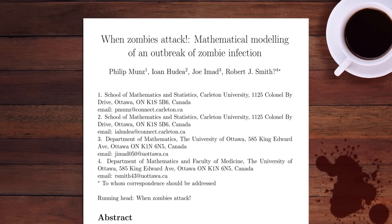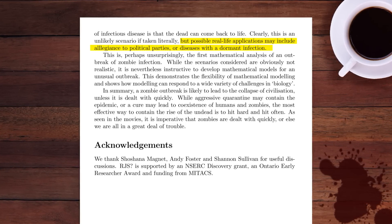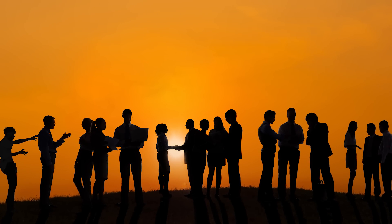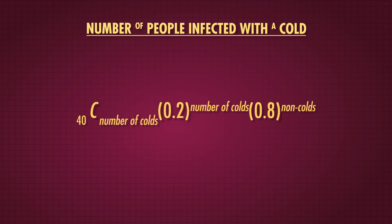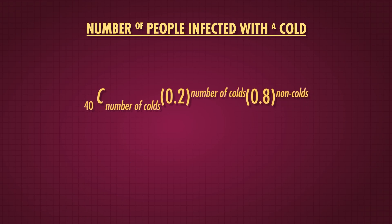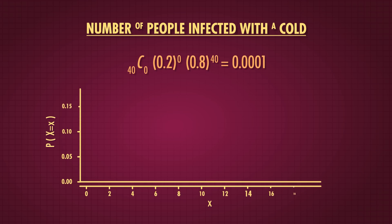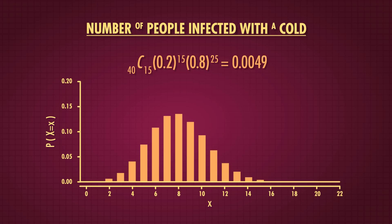While zombies are probably not on your day-to-day list of concerns, this kind of calculation might be. Important public health issues, such as the spread of pandemic-level viruses, can be modeled using a similar approach. We could calculate the probability that of the 40 people you shook hands with at the zombie apocalypse meetup, 2 or fewer had the cold that's been going around. If the probability of having a cold is 20%, the probability of only 2 or fewer people having a cold is only about 0.7%. From the binomial distribution with 40 people and a 20% chance of having a cold, it's much more likely that more than 2 people will have the sniffles. In fact, you'd expect 20% of 40, or 8 people, to have a cold at any similar meeting.